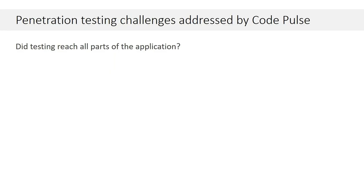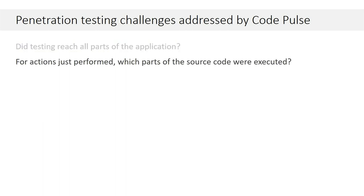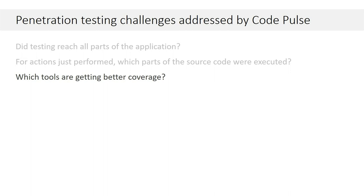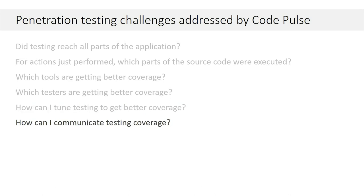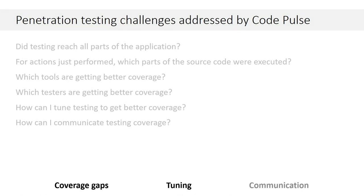CodePulse helps with several things. It'll tell you if you've reached all of the application. As you're doing actions within it, you can see which parts of the source code were executed — just like in the house analogy, you can see in real time how much coverage you're getting. You can compare different tools to see which ones are getting better coverage, compare multiple testers to see which parts of the app they're testing more. Most importantly, it helps you tune your testing tools and then communicate the testing coverage to others.